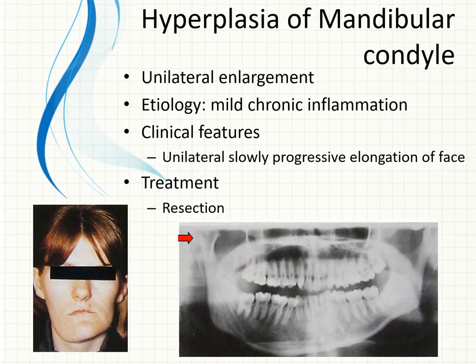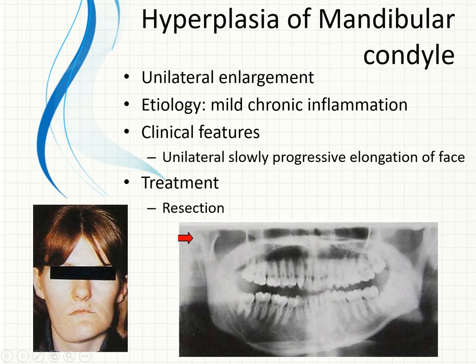Similar to hypoplasia, unilateral enlargement leads to hyperplasia of the mandibular condyle, which also causes facial asymmetry — but the slant will be opposite to the affected side. The etiology is generally thought to be a mild chronic inflammation of the joint space, leading to progressive growth of the cartilage and bone. Treatment is mainly resection of the joint to restore symmetry and proper movement.